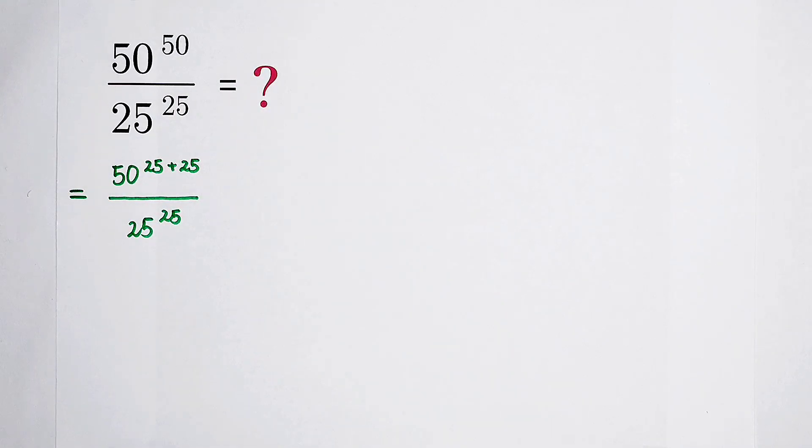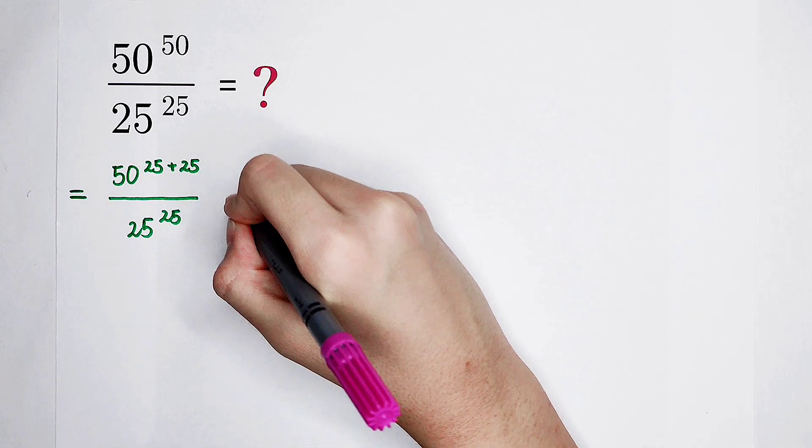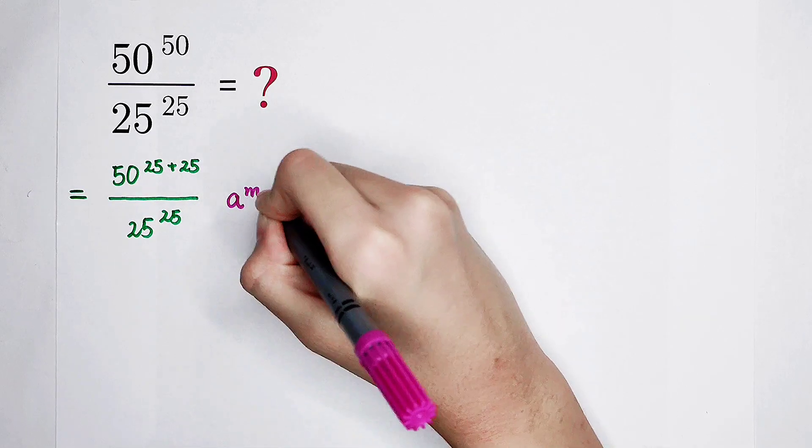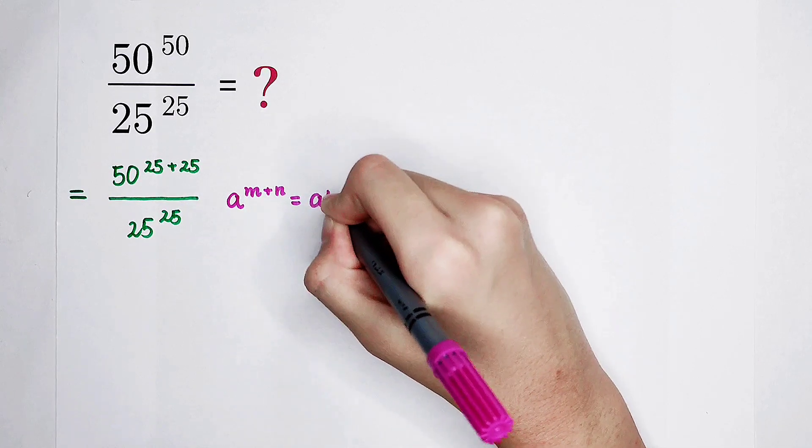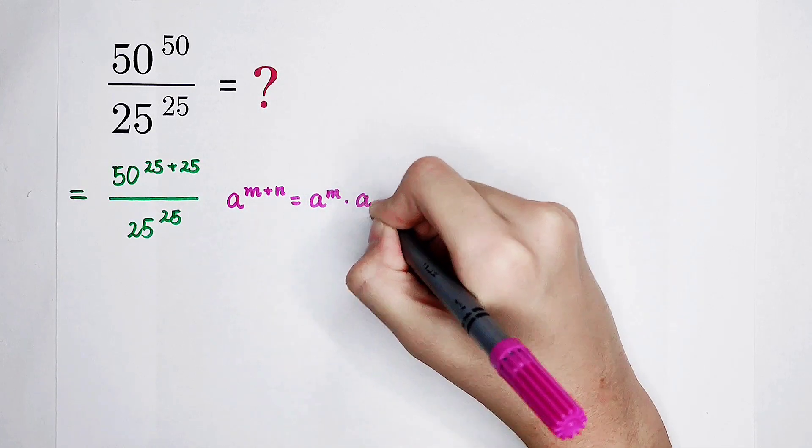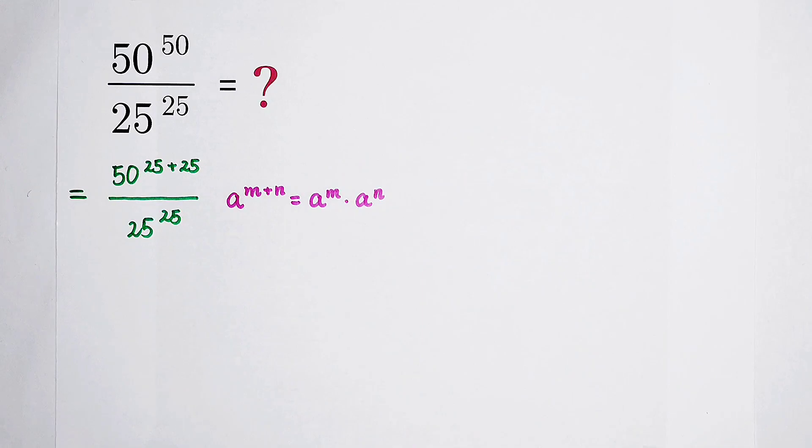We have to use a formula. That is, a to the power of m plus n is equal to a to the power of m times a to the power of n. Very good.